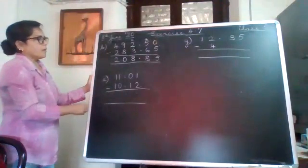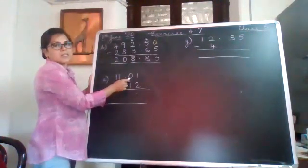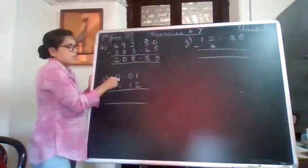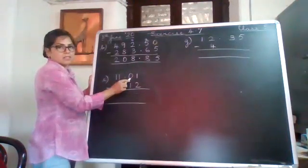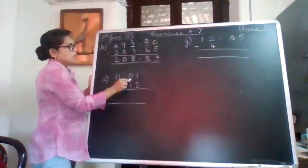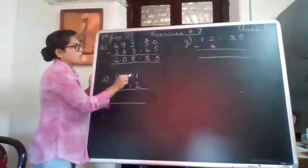Then this one: 1 minus 2, again not possible. You have to borrow from here, but there is 0, so you borrow from here. From here you cannot borrow straight away. You have to first bring it to 0. So when you borrow from here to here, this becomes 10. Now from 10 you can borrow 1, so this becomes 9 and this becomes 11.